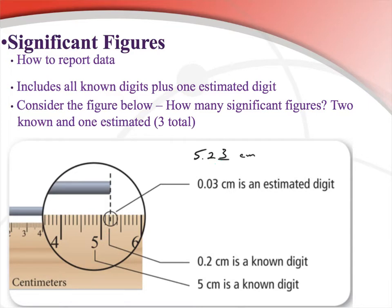When taking data with a ruler, or a graduated cylinder which you'll see later, that's how you write it down. Scales that you weigh things on already do this for you — the last digit the scale gives you is an estimated value. So if you're weighing something on a scale, the last one is estimated.